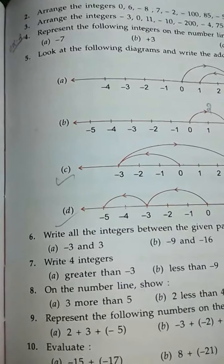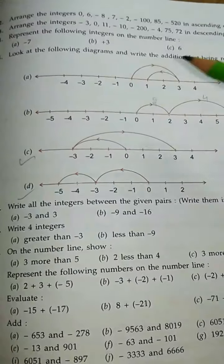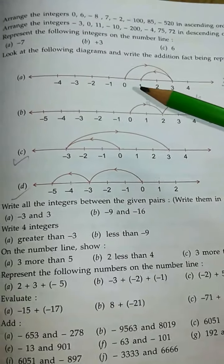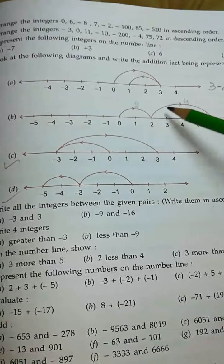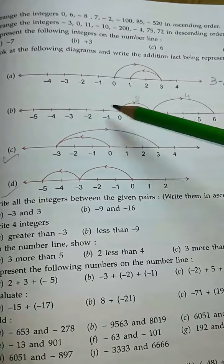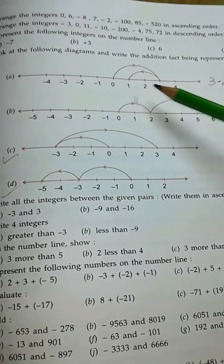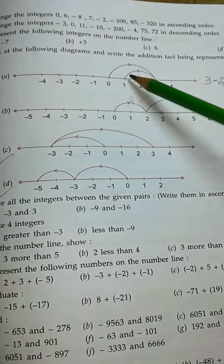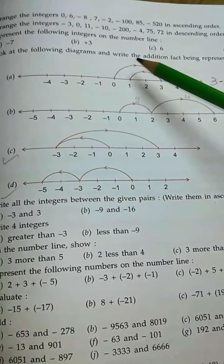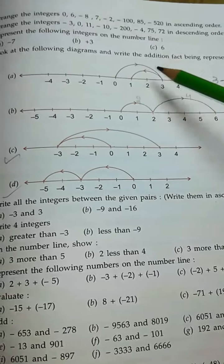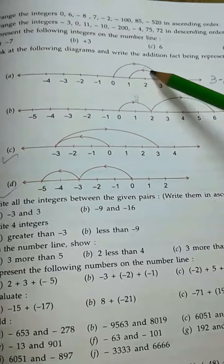Then comes to question 5: look at the following diagrams and write the addition fact being represented by the diagrams. Here, you see the number line and some arrow marks are given. This arrow mark means we move forward and this arrow mark means we move backward.